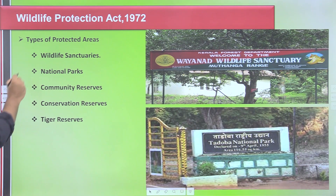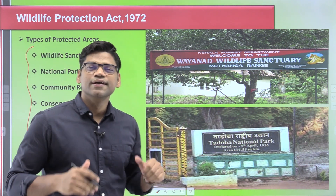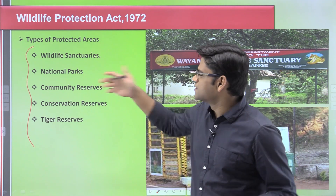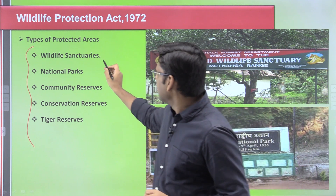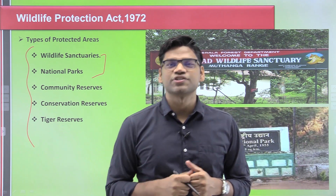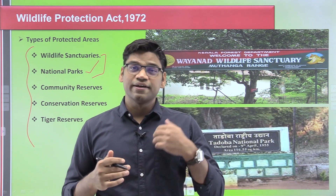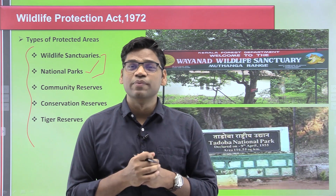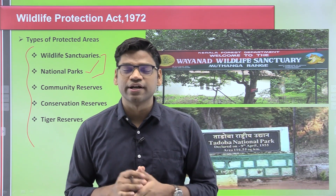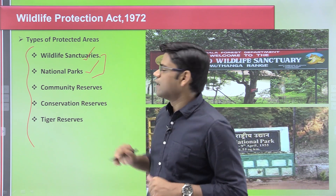This particular act also deals with various types of protected areas. It is important to know how a protected area is declared, and also what the differences between them are. What is the difference between a wildlife sanctuary and a national park? The difference is in the degree of protection. In a national park, human activities like grazing and collection of material are generally not permitted. On the other hand, various activities are permitted when it comes to wildlife sanctuaries.